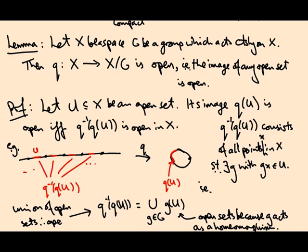Right, so that shows you that q of U is open because its pre-image under the quotient map is open. You see, we really used the group action here. In general, there's nothing like this that allows us to make this argument for a quotient space that isn't a group quotient.